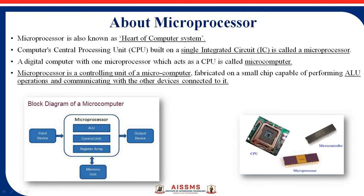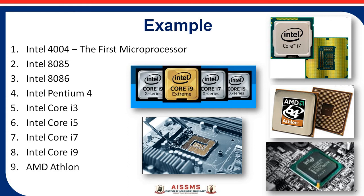A digital computer with one microprocessor which acts as a CPU is called a microcomputer. Basically, this microprocessor works as a microcomputer because every instruction goes through this particular processor. Microprocessor is a controlling unit of microcomputer, and it is one fabricated small chip which is capable of performing arithmetic logical operations and different communications between devices. I will explain this block diagram next.